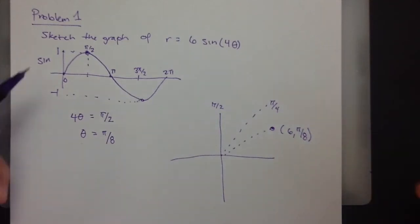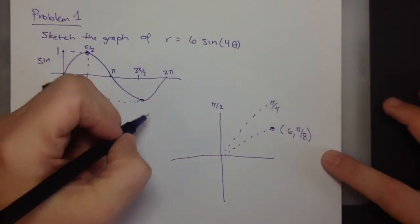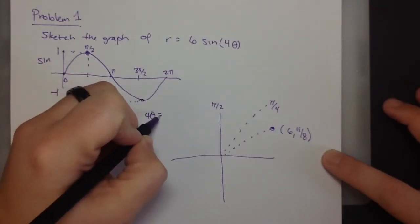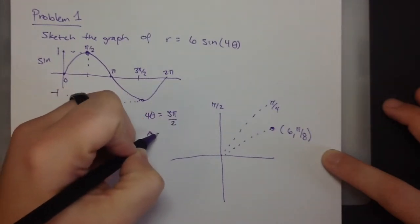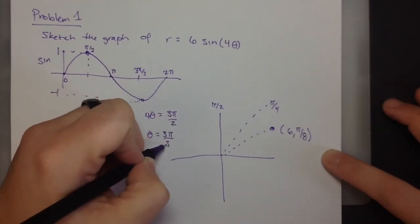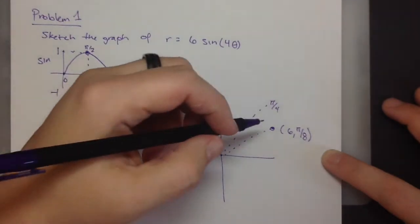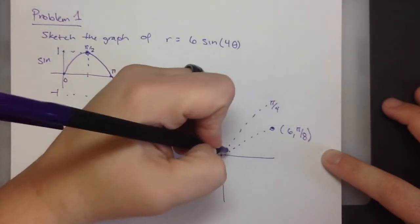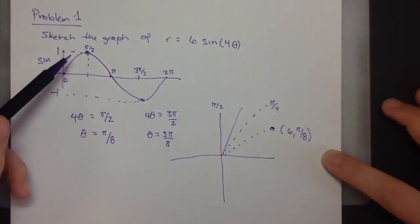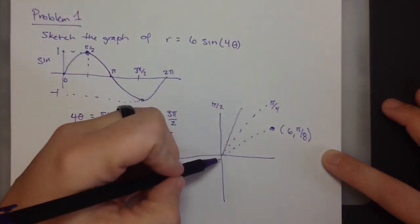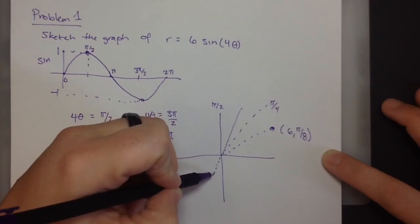Now, what if we get to here? We want 4 theta to be 3 pi over 2. So, that means theta is 3 pi over 8. So, when theta is 3 pi over 8, which would be here, right? R is not 6, it's negative 6. Fascinating. So, we are here.